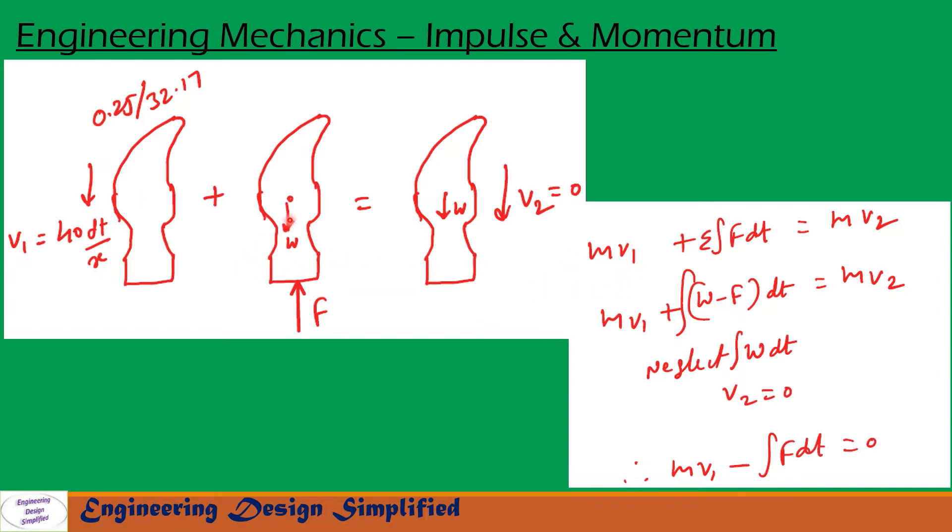And there are impulsive forces: its own weight, the hammer's weight will be acting vertically downwards, and a resistive force from the nail is going to act in the upward direction. So the impulsive forces can be written as sigma integral of F dt.